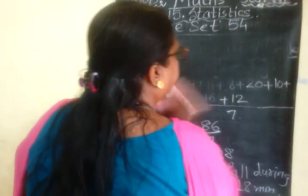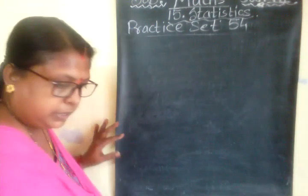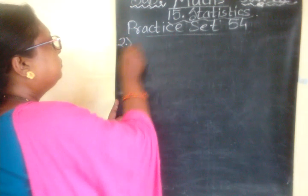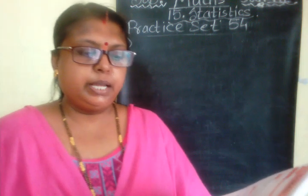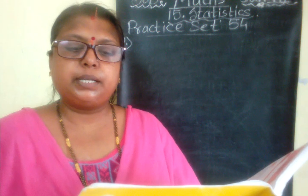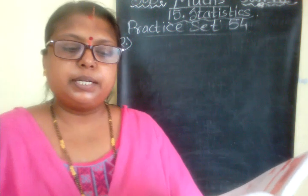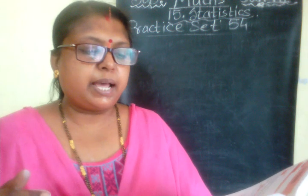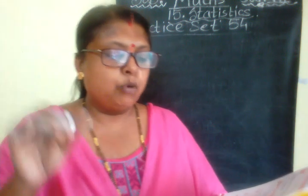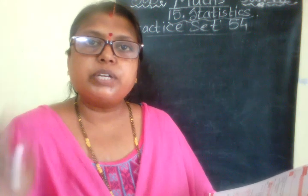Now let us move to the second sum. During the annual function of a school, a women's self-help group had set up a snack stall. Their sales every hour were rupees 960, rupees 830, rupees 945, rupees 800, rupees 847, and rupees 970 respectively. What was the average hourly sale? There are 6 numbers, meaning 6 hours of sales are given, and we have to find the average earning per hour.